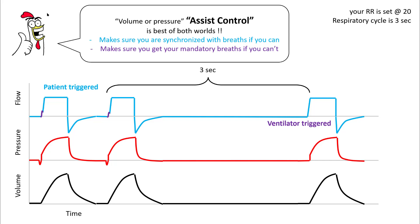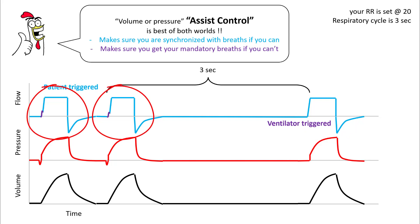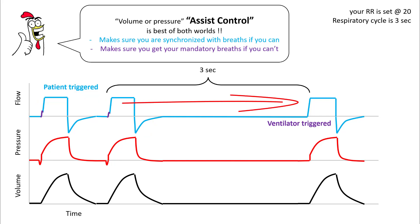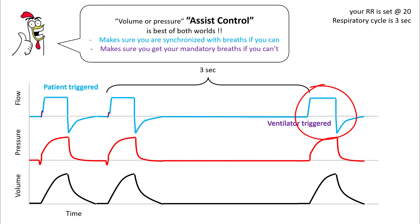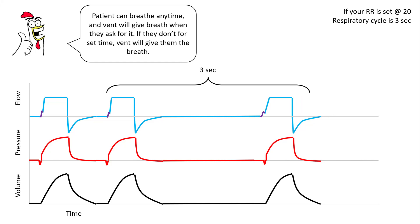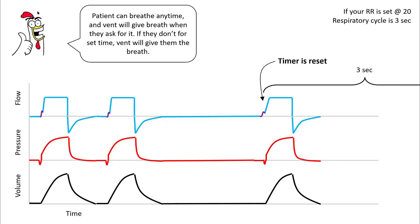Since patient-triggered and ventilator-triggered breaths each have their own advantages and disadvantages, you can combine both triggers in what we call assist control. In assist control, patient-triggered breaths are prioritized — whenever the patient wants to breathe, the machine gives the breath. If the patient cannot generate a breath, they get mandatory breaths from the vent trigger. For example, if the patient was triggering initially and then did not trigger for 3 seconds, the vent triggered it since the respiratory rate was set at 20. If the patient wants to breathe before 3 seconds, they are allowed to do so and that resets the timer. Every time the patient triggers a breath, a timer starts, and if the patient does not breathe within that time, the ventilator will trigger the breath.